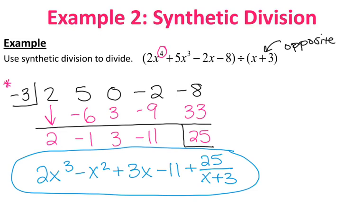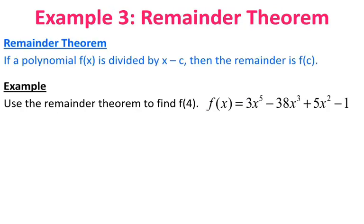Synthetic division can also be used for the remainder theorem. If a polynomial f(x) is divided by x minus c, then the remainder is equal to f(c). This allows us to calculate function values. I want to use the remainder theorem to find f(4). Setting that up as a factor gives x minus 4, so essentially I'm dividing this polynomial by x minus 4 using synthetic division.